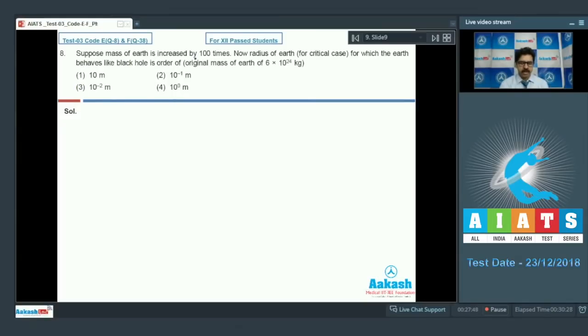Question 8: Suppose mass of earth is increased by hundred times. Now radius of earth for which the earth behaves like a black hole is of the order of? What is a black hole? It is a super dense object from which even light cannot escape. So the escape speed from the surface of the black hole is greater than or equal to speed of light. The general formula you know is square root of 2gm upon r.